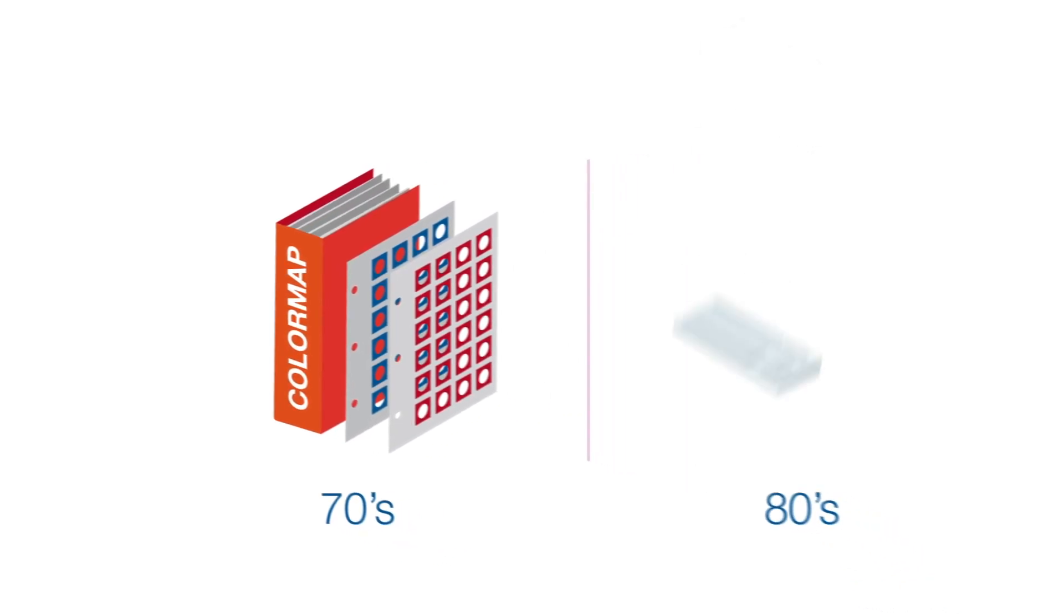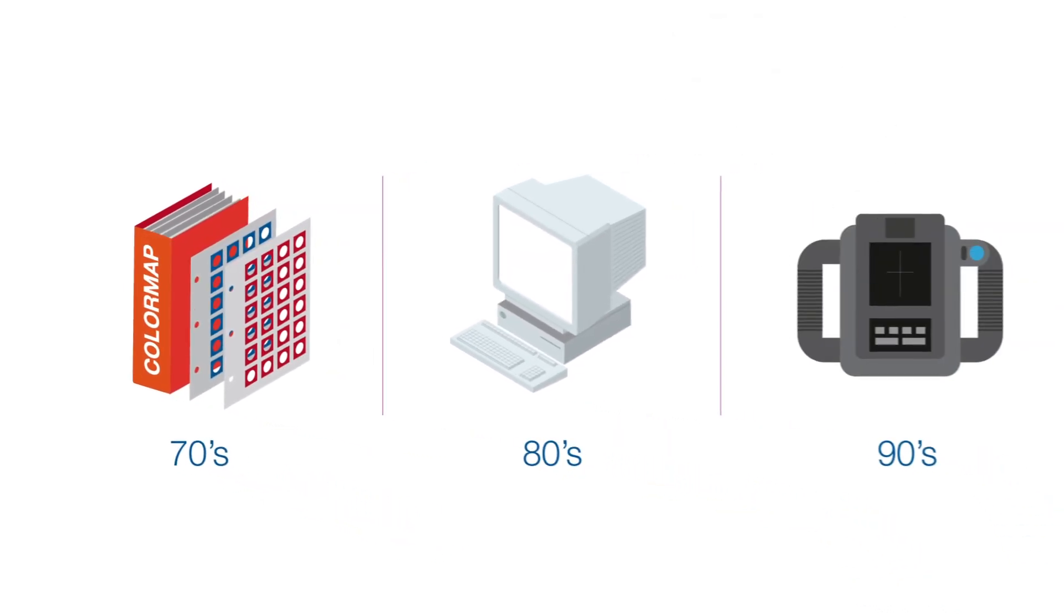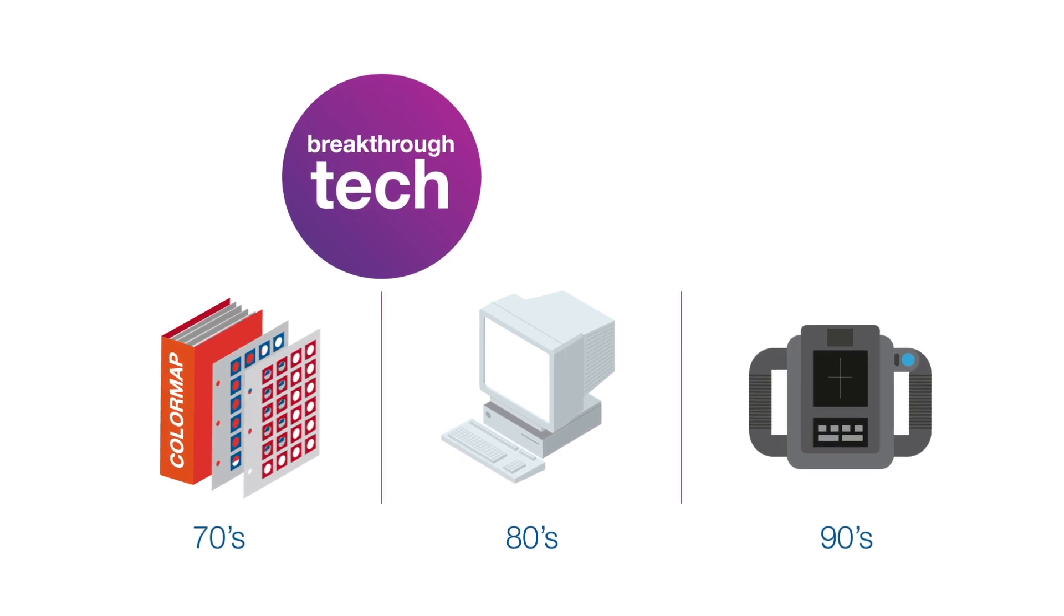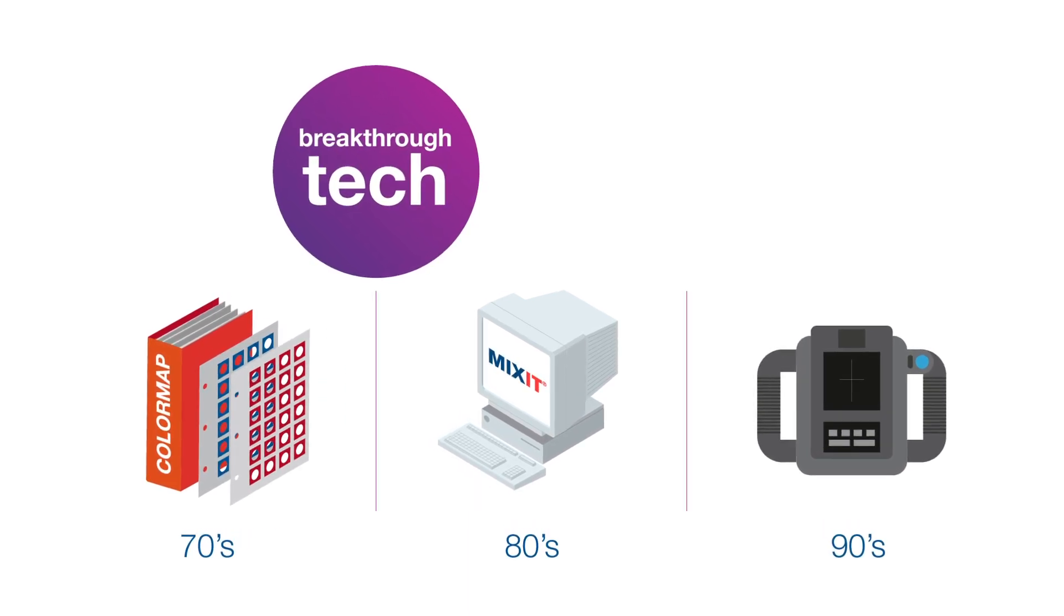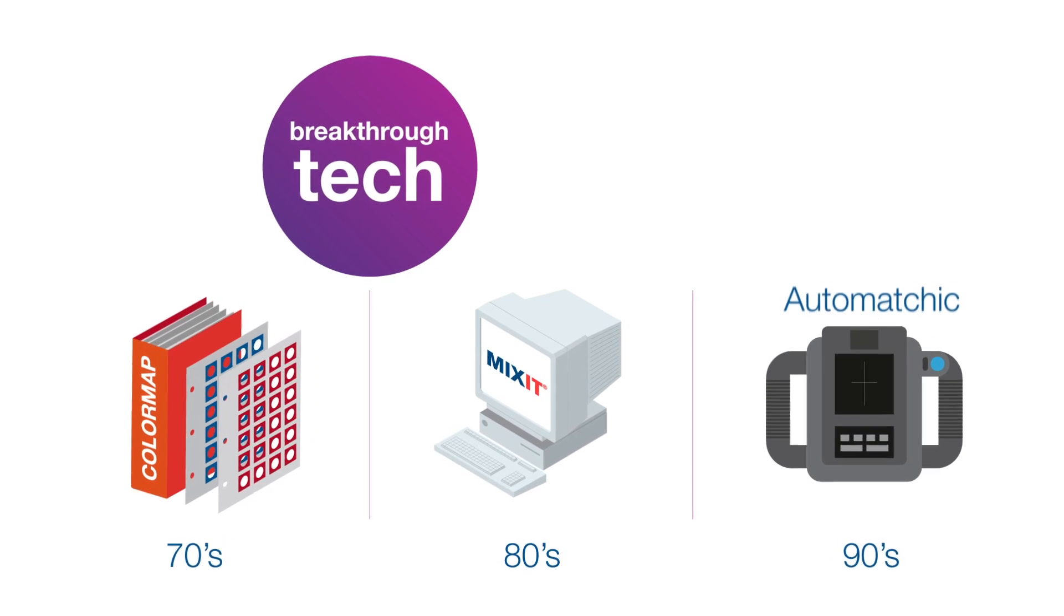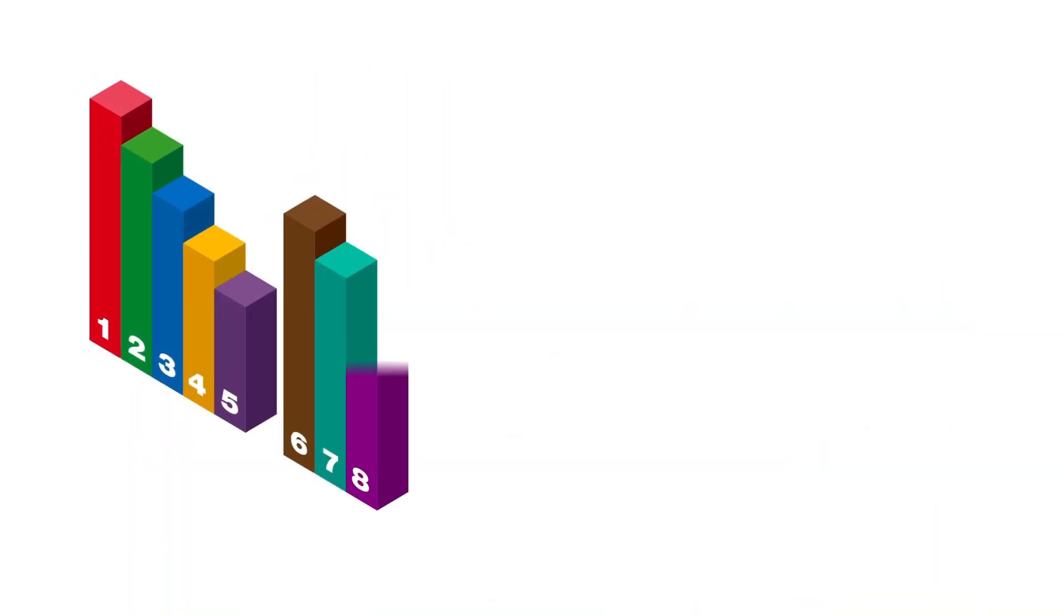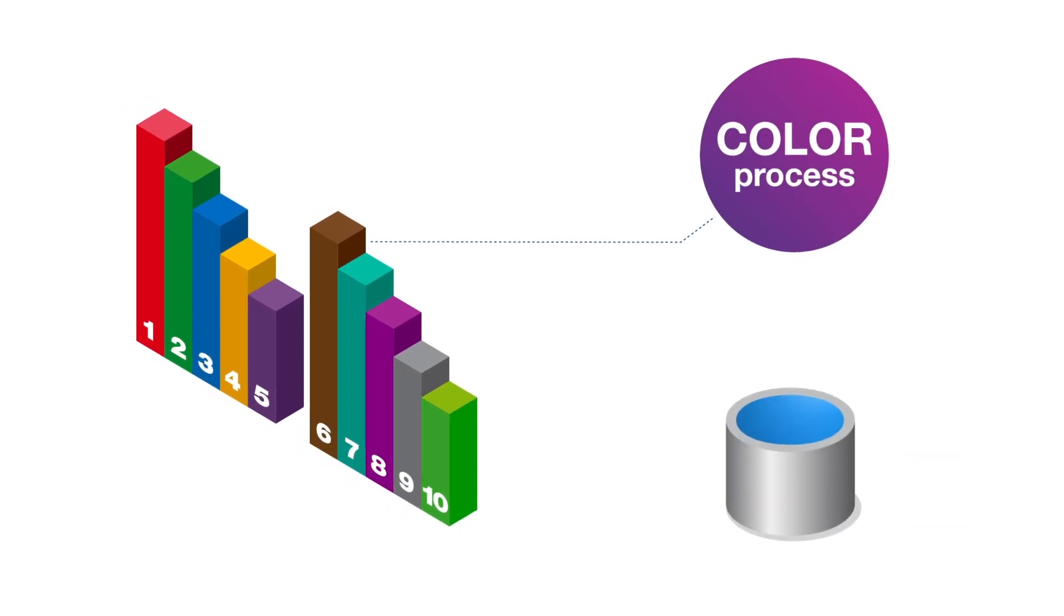AXO Nobel has led the vehicle refinishing industry in color for many years by introducing breakthrough technologies such as ColorMap, Mixit and the first industry spectrophotometer, Automatic. We know color and our 10 step color process delivers first time right color in the body shop.